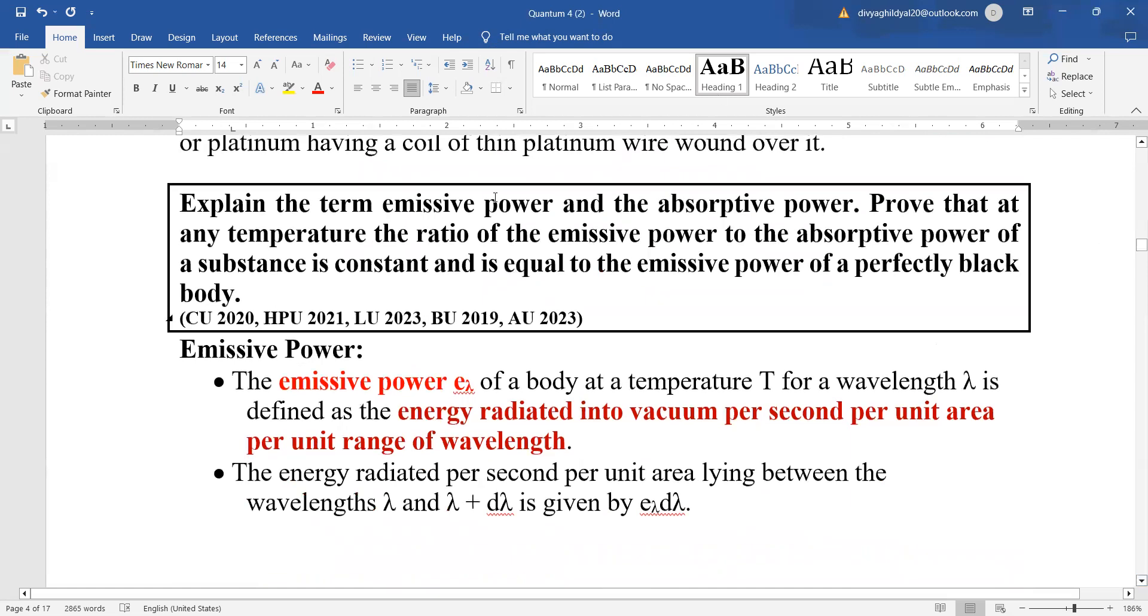Now this question: explain the term emissive power and absorptive power. Prove that at any temperature, the ratio of emissive power to absorptive power of a substance is constant and it is equal to the emissive power of a perfectly black body. This has been asked at undergraduate level in many exams. It is a long question.